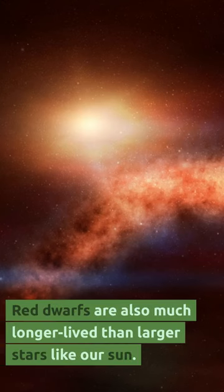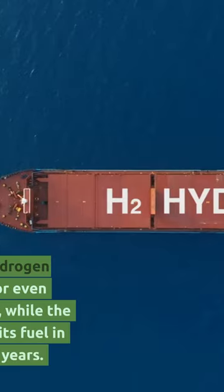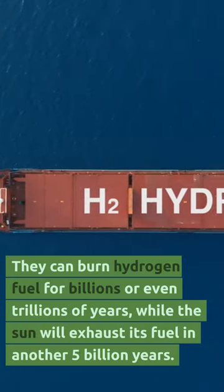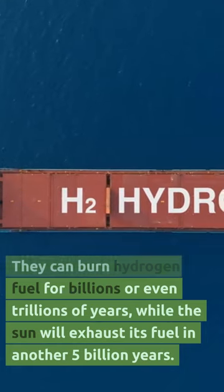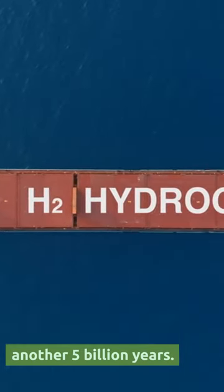Red dwarfs are also much longer lived than larger stars like our sun. They can burn hydrogen fuel for billions or even trillions of years, while the sun will exhaust its fuel in another 5 billion years.